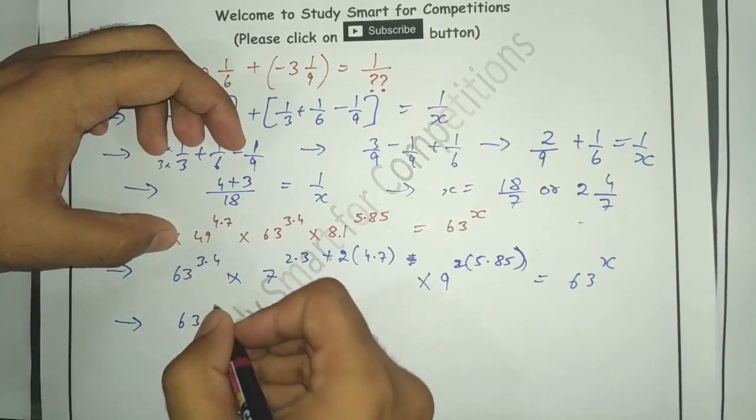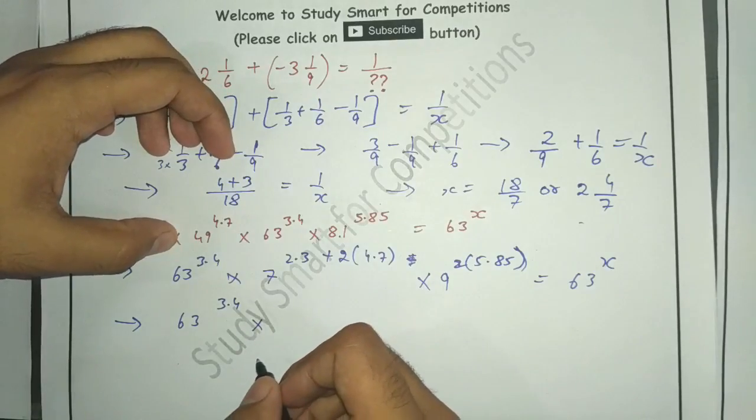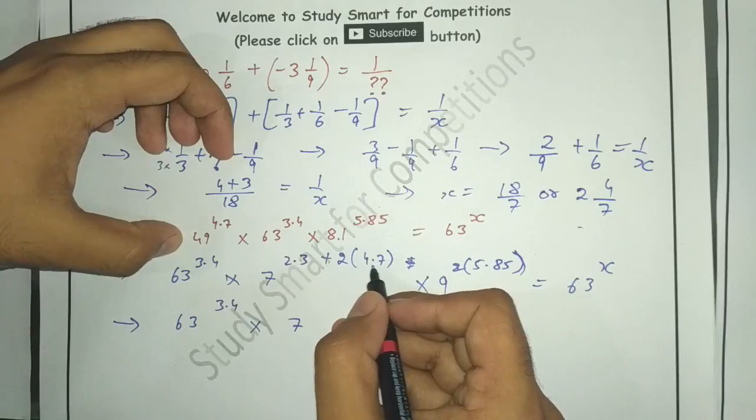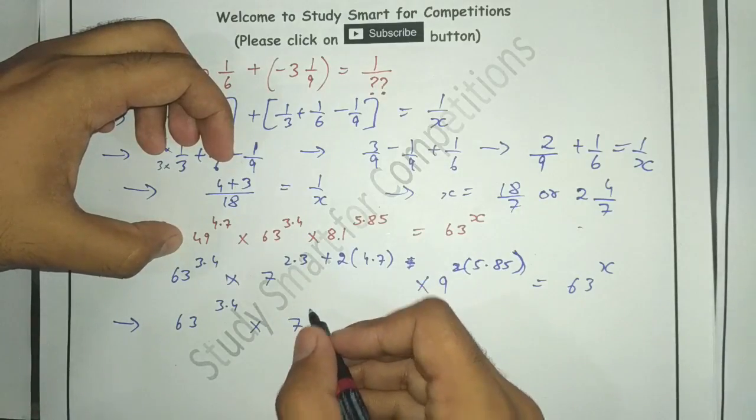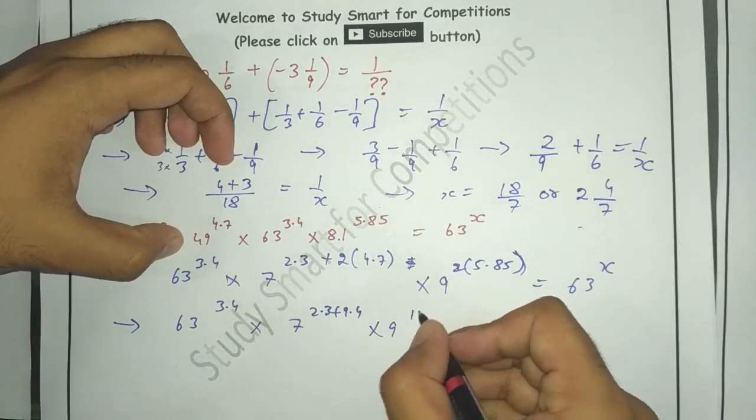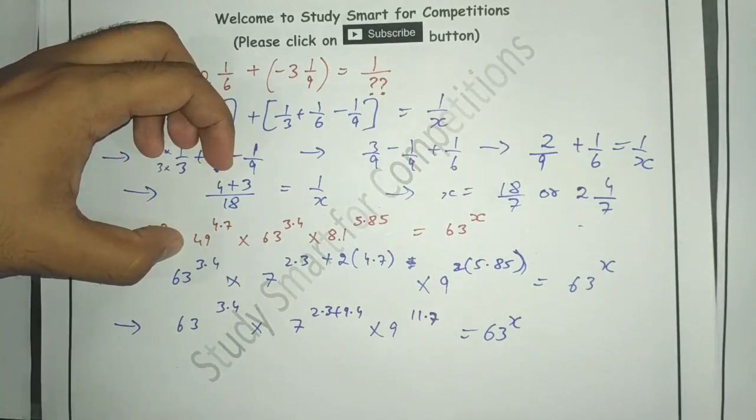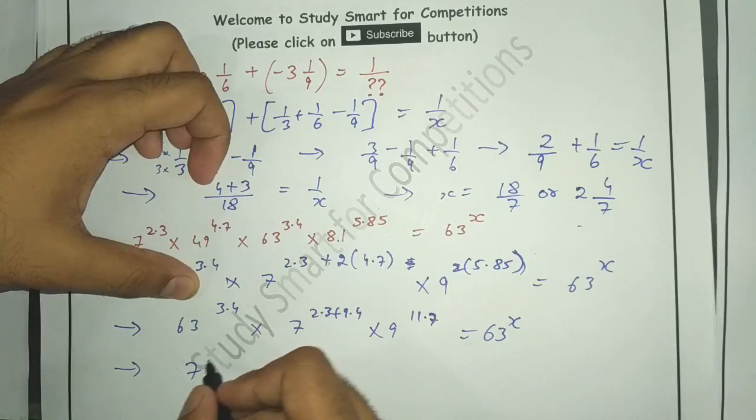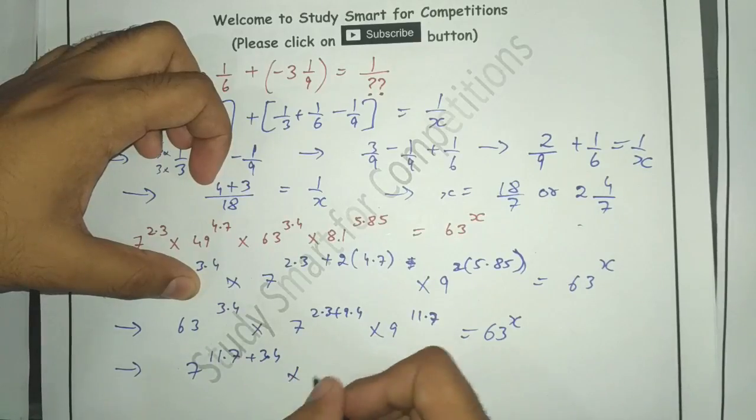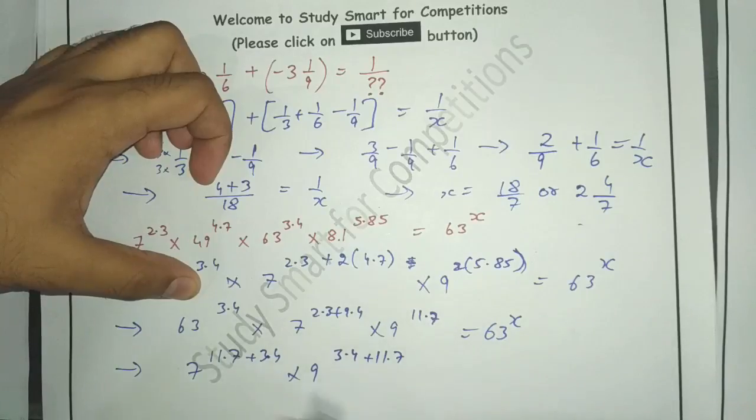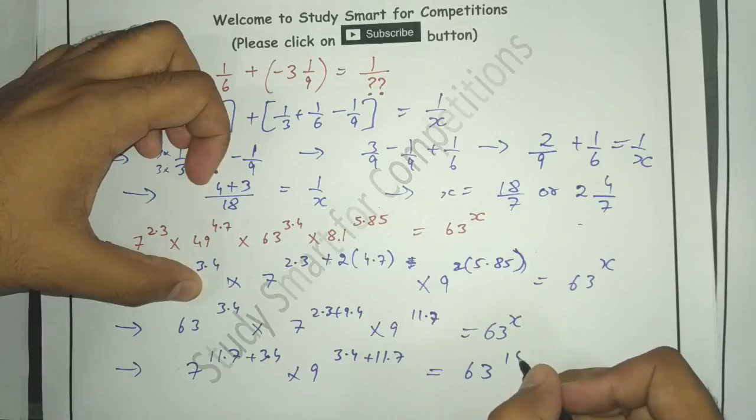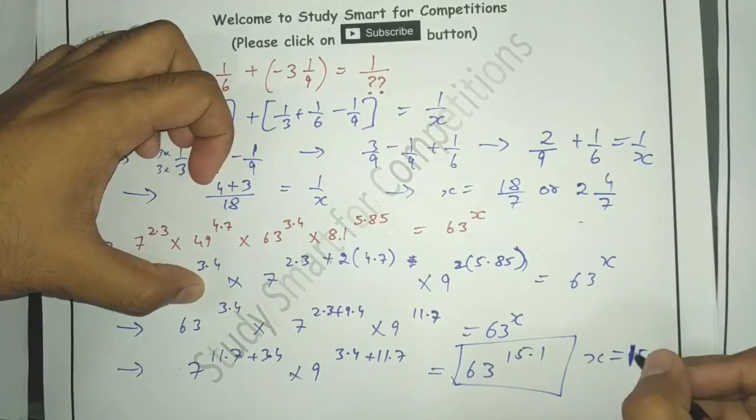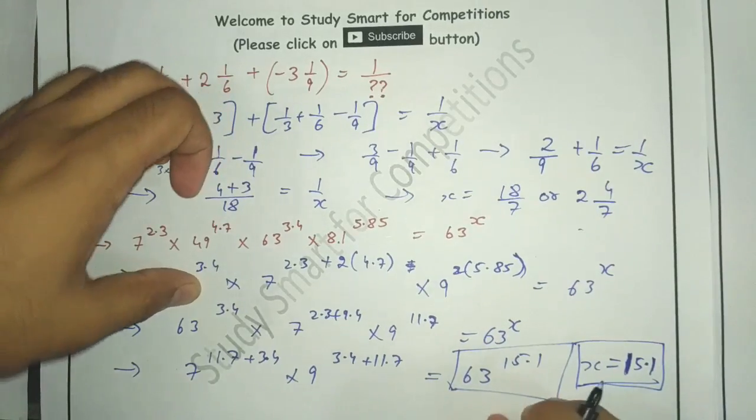That is what I'll be doing here. 63 raised to the power 3.4 into 63 to the power (2.3 + 9.4) - sorry, let me recalculate. Seven total will be 2.7, 11.7 plus 3.4 into 9 is to the power 3.4 plus 11.7. Again it is the same stuff which will give me 63 raised to the power 15.1. So I have got my x. X here is 15.1.